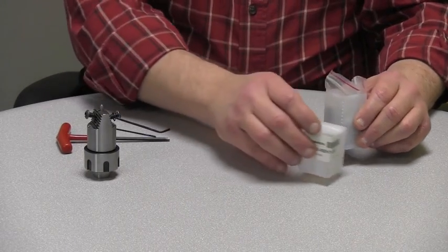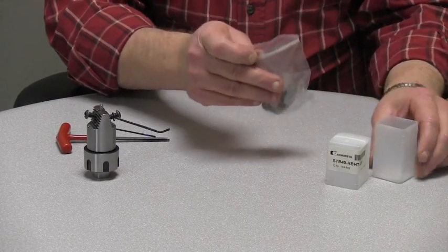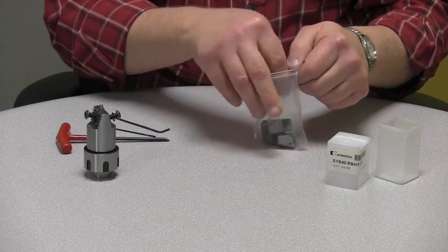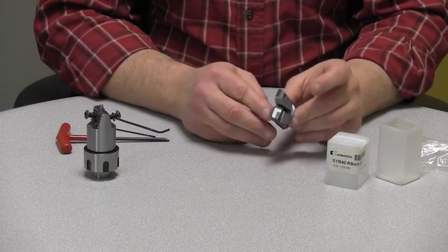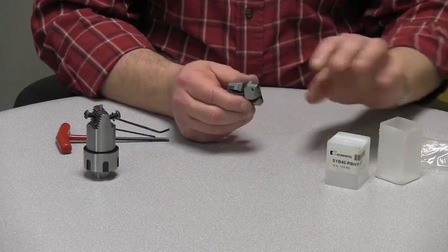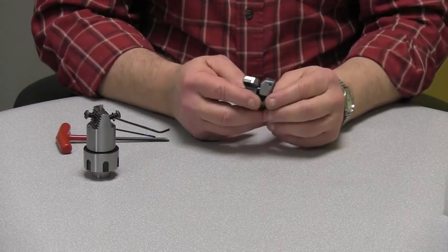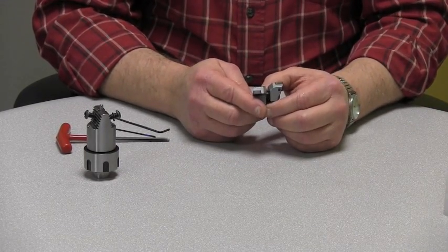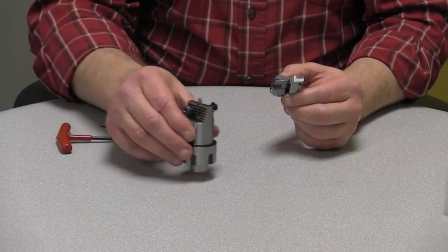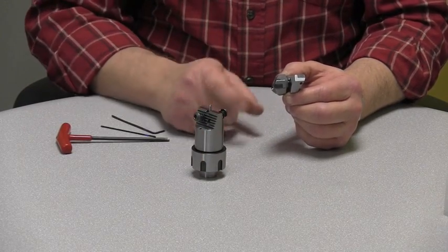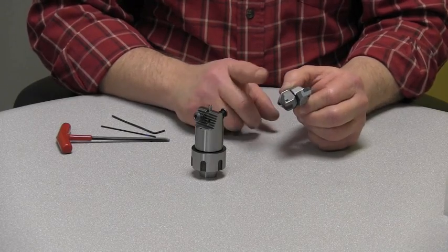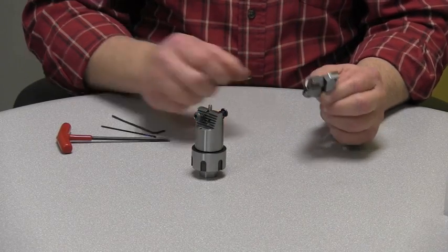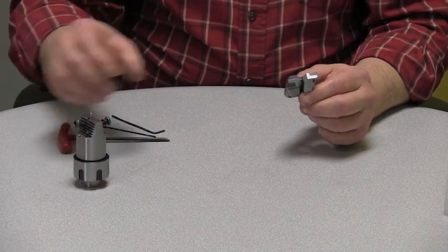When you first receive the blade set, you will notice as you take it out of the packaging, it is completely assembled. This blade set will not fit directly onto the bore body, or the boring body, unless it is completely taken apart first. So let's go through the disassembly.